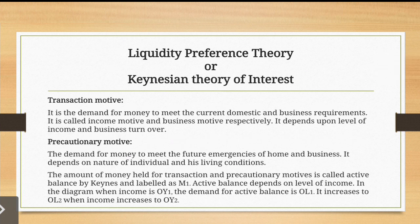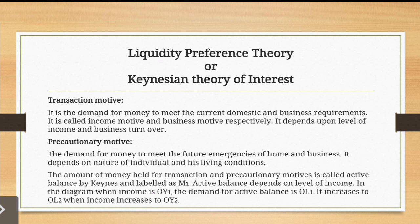The first motive is the transaction motive — the money you need for your day-to-day domestic and business requirements. This is known as transaction demand for money: the demand for money to meet current domestic and business requirements. If it is for household needs, it is called the income motive; if it is for business day-to-day requirements, it is called the business motive. Together, income motive and business motive make up the transaction motive.